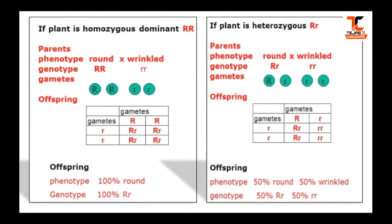As you can see in the example, if a plant is homozygous dominant — that is, round (RR) — it can be crossed with wrinkled (rr), and we get 100% round as the phenotype and 100% heterozygous as the genotype. Whereas in the second case, if the plant is heterozygous, the results are 50% round and 50% wrinkled respectively. This is back cross.